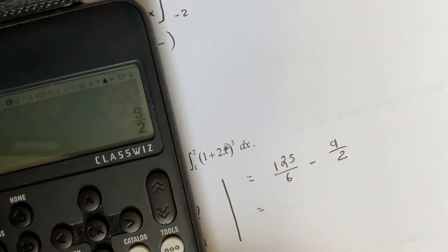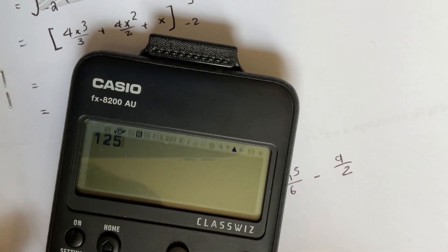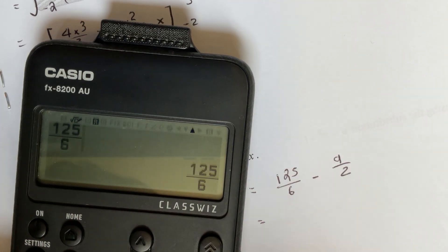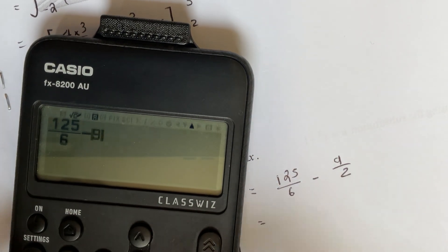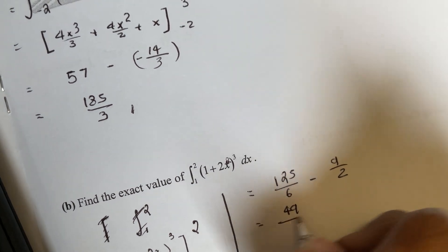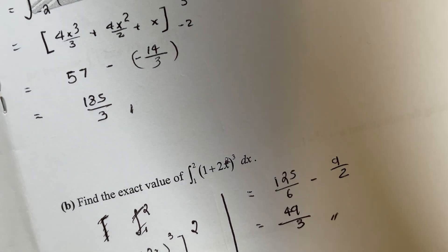And now that's equal to 125 on 6 minus, it's equal to 49 by 3. Thank you.